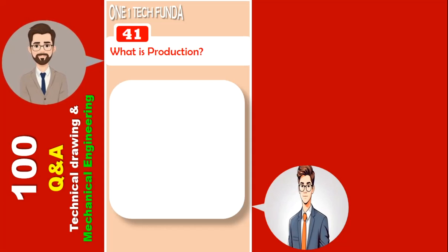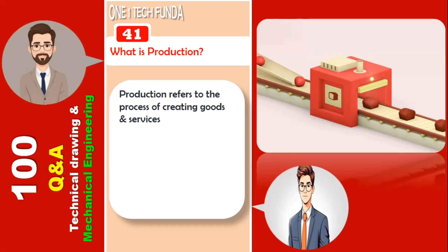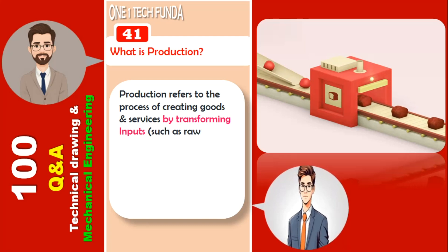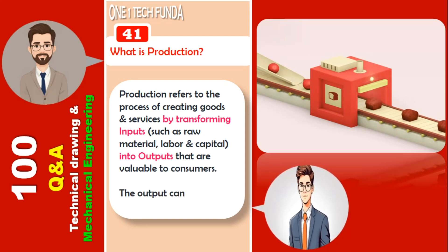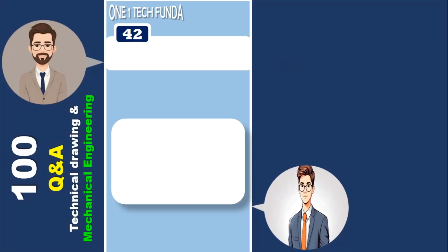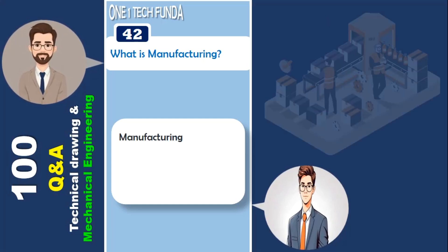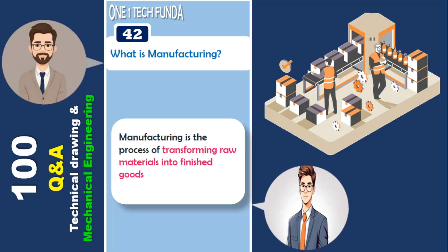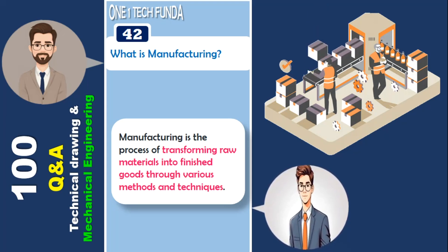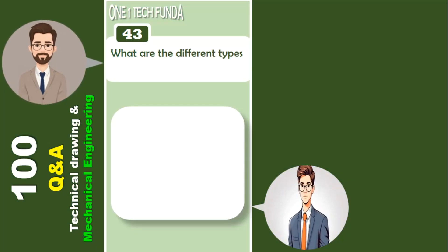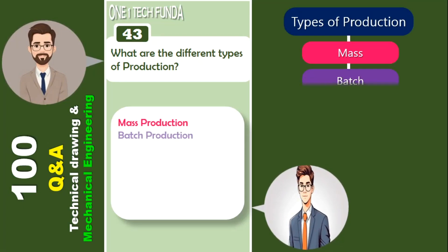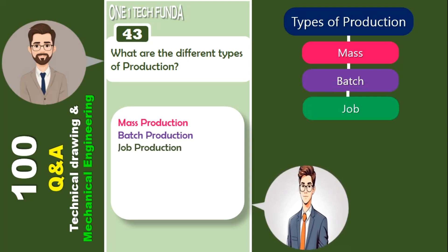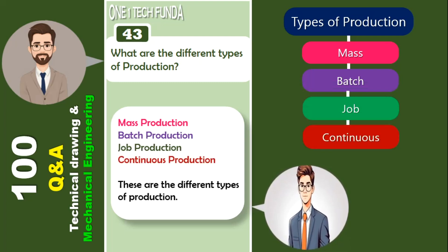What is production? Production refers to the process of creating goods and services by transforming inputs such as raw materials, labor, and capital into outputs that are valuable to consumers. The output can be either tangible or intangible. The different types of production include mass production, batch production, job production, and continuous production.